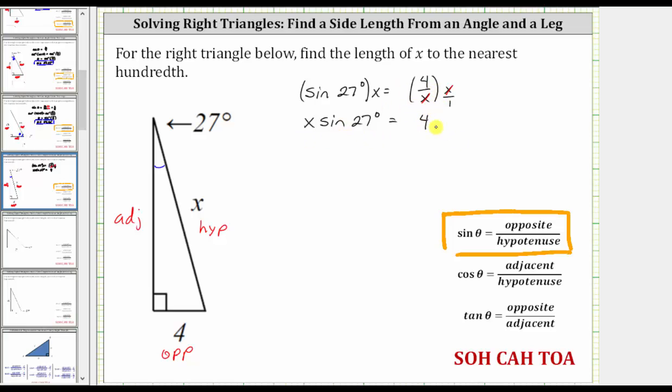And now to solve for x, we divide both sides by sine 27 degrees. Simplifying, sine 27 degrees divided by itself simplifies to one. x times one is just x. We have x equals four divided by sine 27 degrees.